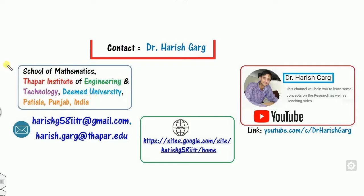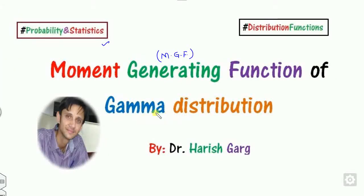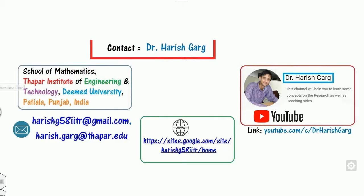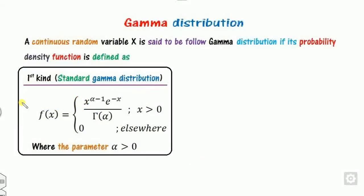In the last class, we discussed what is the gamma distribution and how we can derive the mean and variance. To quickly recall: gamma distributions are of two kinds. The first kind is called the standard gamma distribution, in which there is only one parameter called the scale parameter, that is alpha.